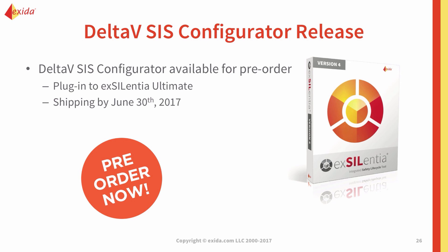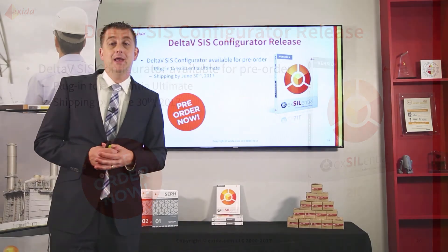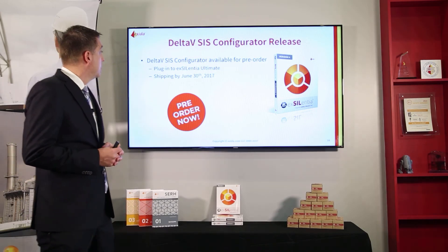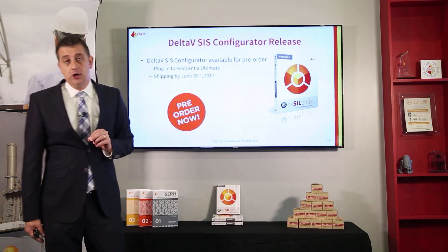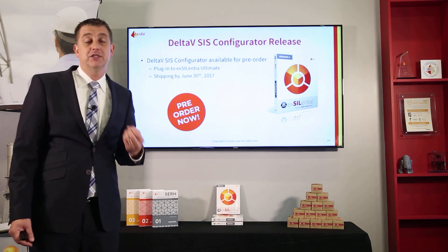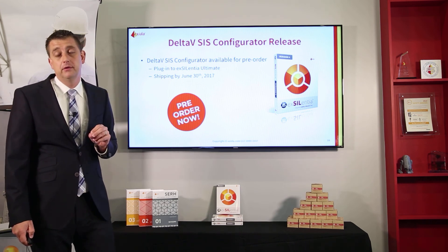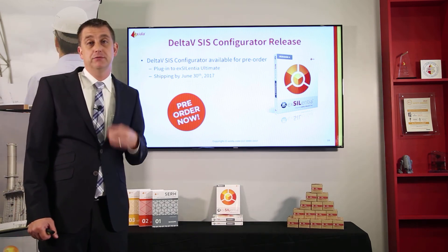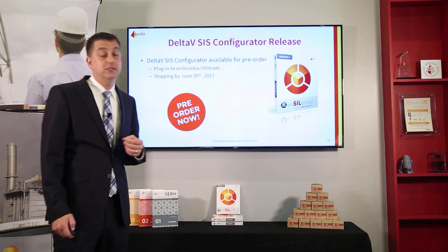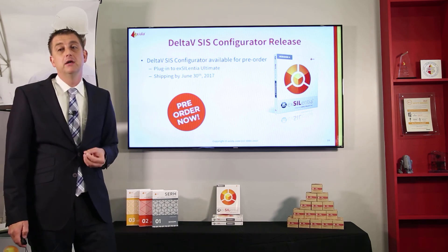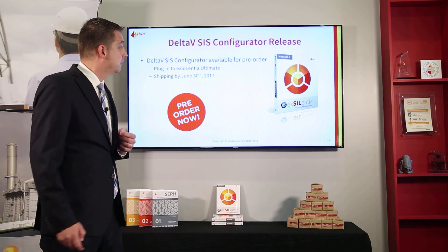We're very excited about this new functionality and are announcing today that it is available for pre-order. If you're interested, contact us directly or contact your local Excellentia representative. It is a plug-in to Accelenture Ultimate, so you'll need an Accelenture Ultimate license. We're shipping no later than June 30th. We're running it on a couple of beta projects and the results are amazing.